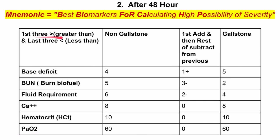The first three criteria have numbers greater than, and the last three criteria have numbers less than what's included in the table. For non-gallstone pancreatitis: base deficit greater than 4, burn greater than 5, fluid requirement greater than 6, calcium less than 8, hematocrit less than 10, and PO2 less than 60.